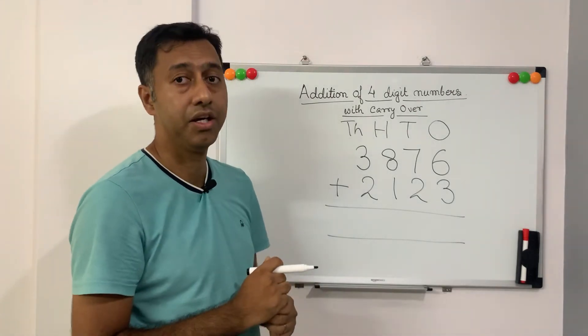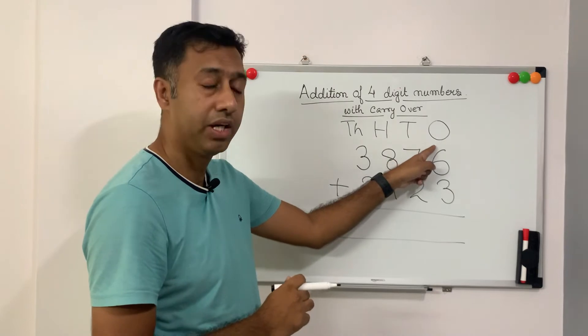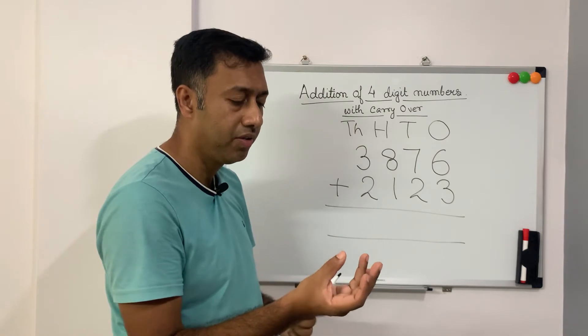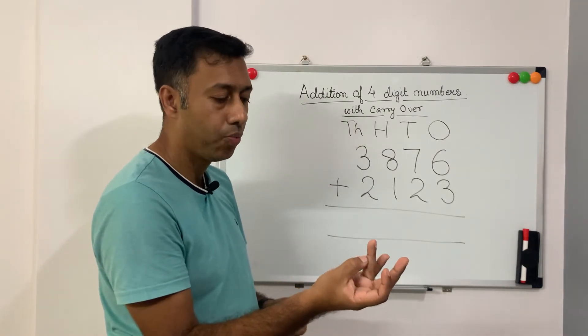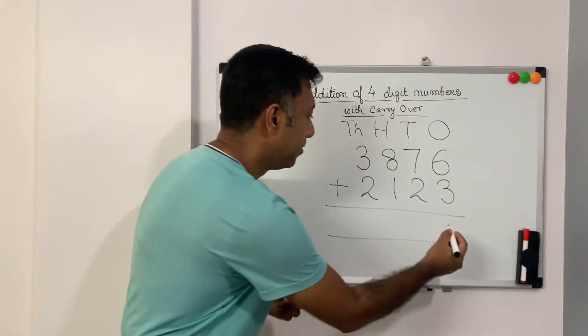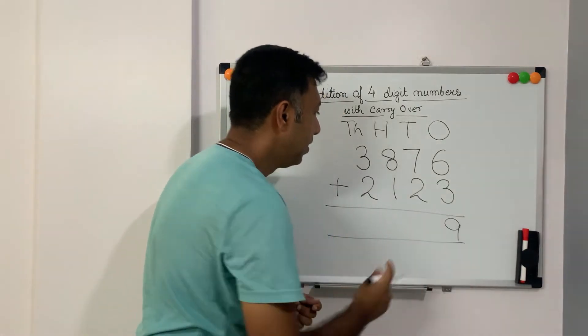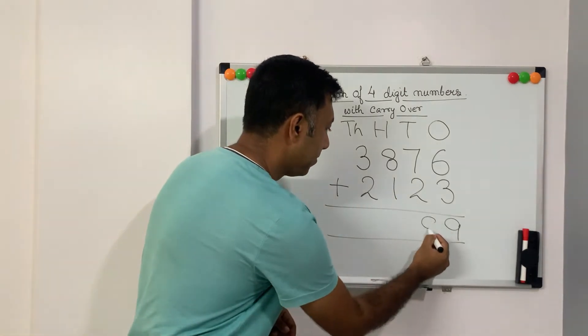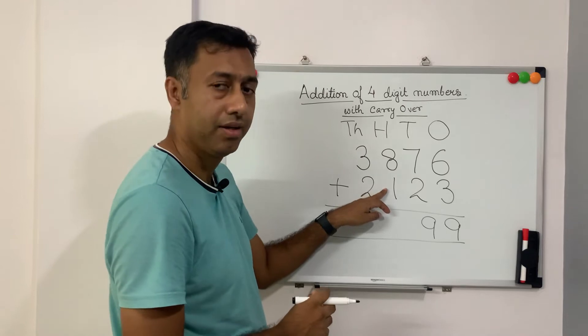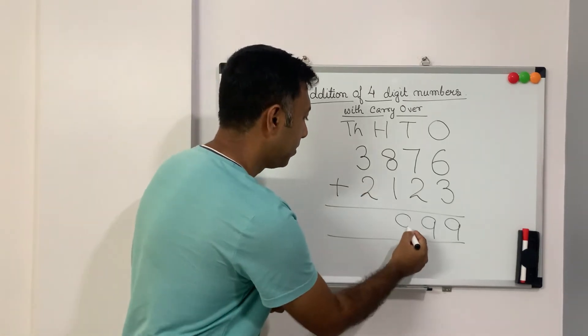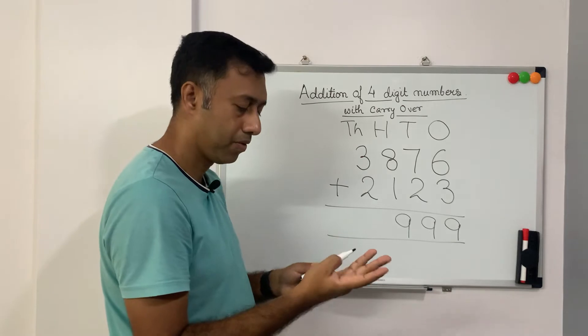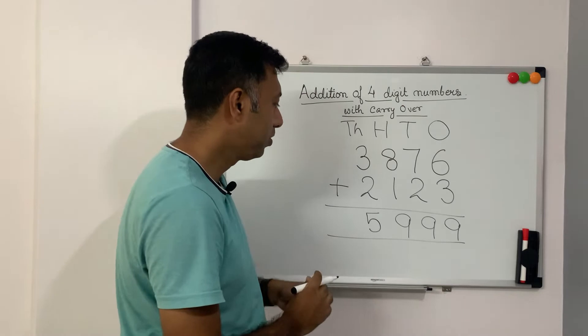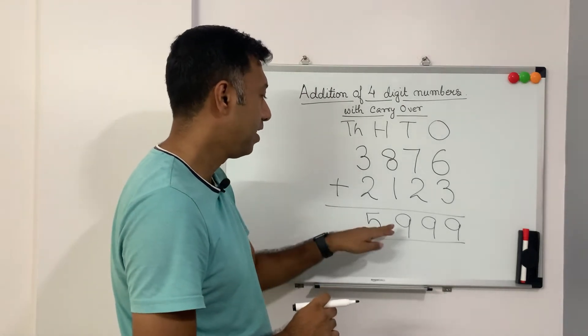Now we will start the addition. First, we will do addition in the ones digit. So 6 plus 3, you can use your fingers, that is 9. Then 7 plus 2 is 9. Then 8 plus 1 is also 9. And 3 plus 2 is 5. So the total is 5999.